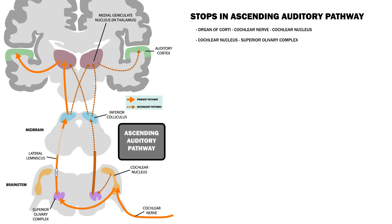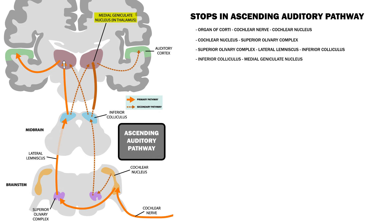The signal continues to be relayed along the lateral lemniscus to the inferior colliculus in the midbrain. From the inferior colliculus, the information is relayed to the medial geniculate nucleus of the thalamus. Most of the neurons taking this trip stay on the ipsilateral side; however, some cross over.